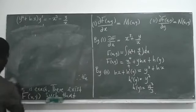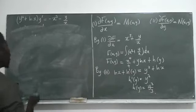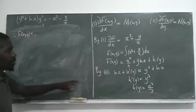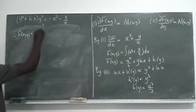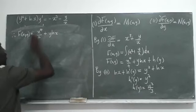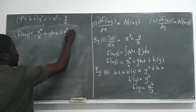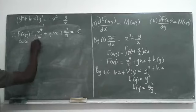Now I can write the complete solution. Therefore F(x, y) equals x to the power 4 over 4 plus y times ln(x) plus y cubed over 3, which equals a constant C, since the ODE is exact.